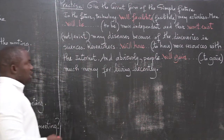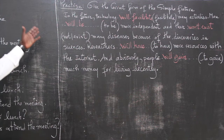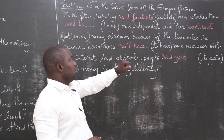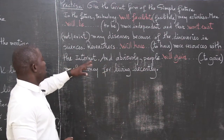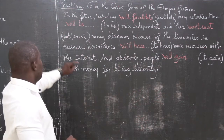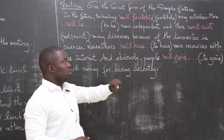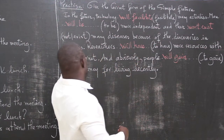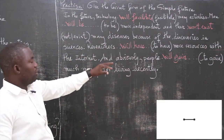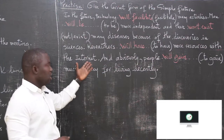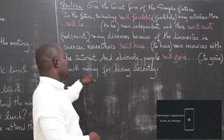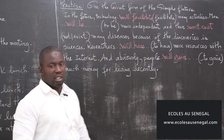Okay, let's read again the practice. In the future, technology will facilitate many activities. Man will be more independent and there won't exist many diseases because of the discoveries in sciences. Researchers will have more resources with the internet. And, obviously, people will get much money for living decently.